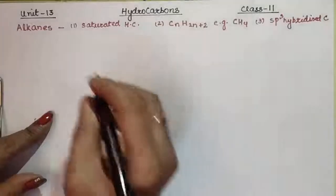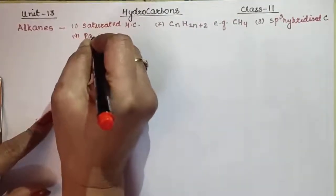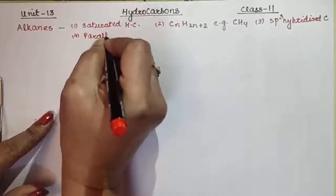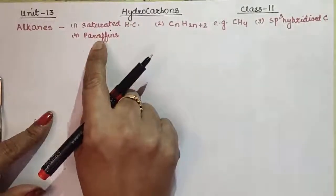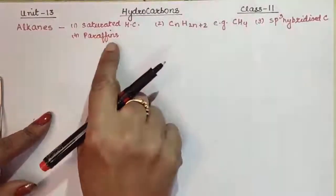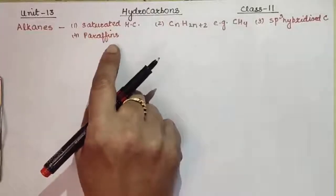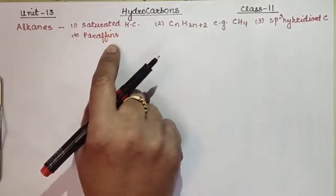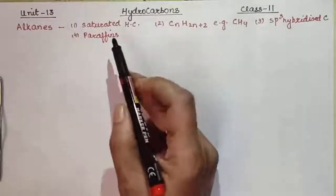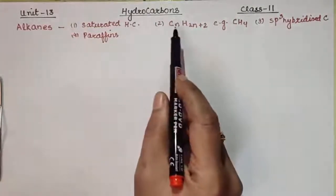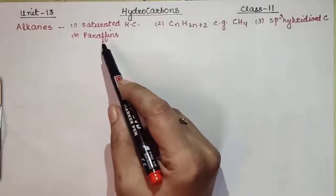Alkanes are called paraffins. Paraffin comes from the Latin word 'parum,' meaning little, and 'affinity.' So paraffins means little affinity or low reactivity. Just because carbon's valency is already satisfied with single bonds, alkanes are low-reactivity molecules.